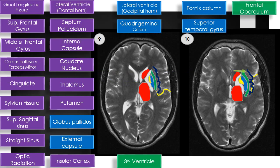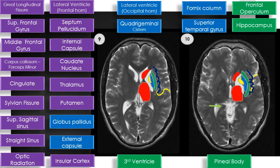Finally, the fornix, frontal operculum, pineal body, and hippocampus are also identified in these cuts.